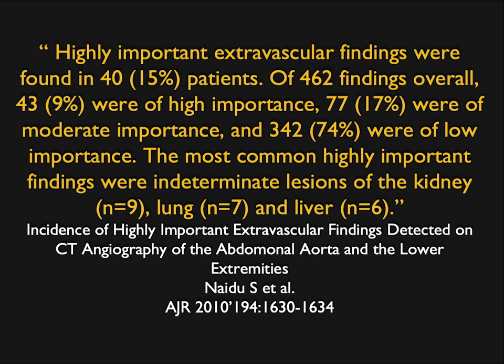The most critical findings were located in the kidney, lung, and liver. This makes a lot of sense because two-thirds of renal cell carcinomas are picked up incidentally. So kidney, then lung nodules and liver masses, are where the important incidental findings tend to be.